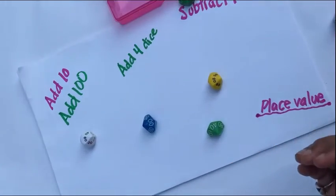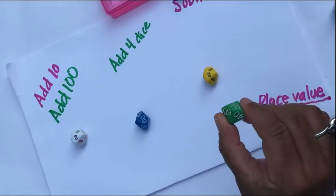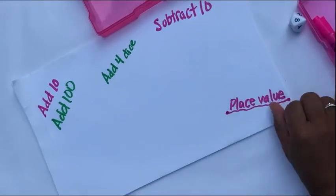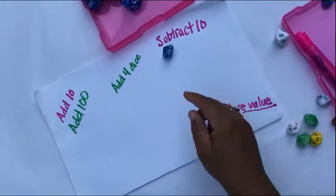I am so excited, these are place value dice and look at them, how cool they are. They have the multiples of 10, so you can do so much stuff. One thing you can do is roll and then the kids have to add 10.